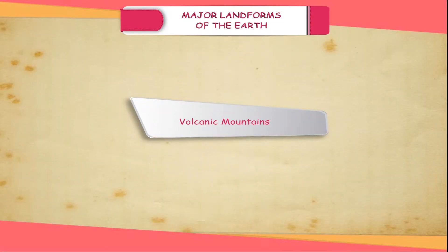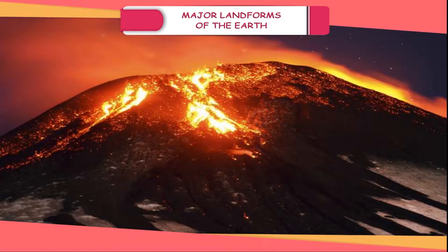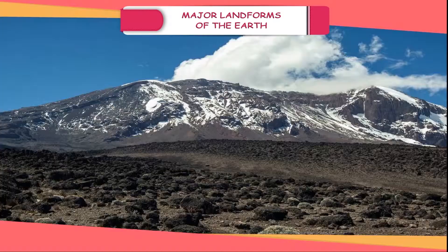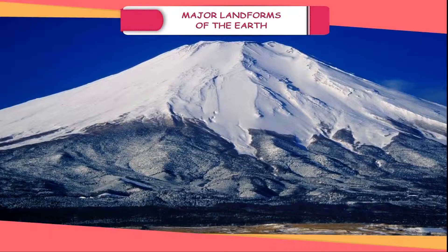Volcanic mountains form whenever there is an eruption of a volcano — the lava comes out and spreads around the volcanic pipe. With the passage of time, the lava solidifies and gives rise to volcanic mountains. Mount Kilimanjaro in Africa and Mount Fujiyama in Japan are examples of such mountains.